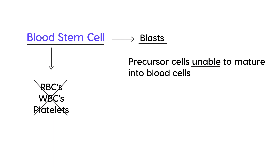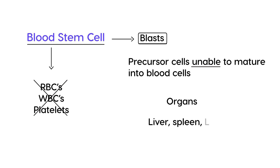But in leukemia, because of this malignant transformation, blasts are unable to mature into proper blood cells. The second problem is that the proliferation of these abnormal cells can also replace normal bone marrow. Additionally, certain organs can be infiltrated by these abnormal cells, causing them to enlarge — specifically the liver (hepatomegaly), the spleen (splenomegaly), and the lymph nodes (lymphadenopathy).